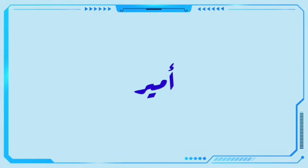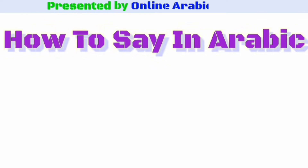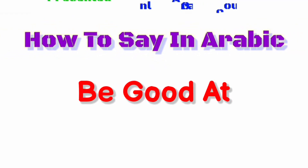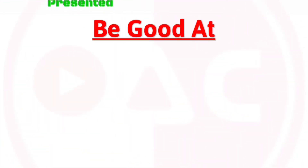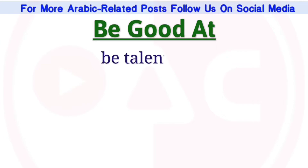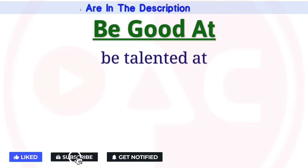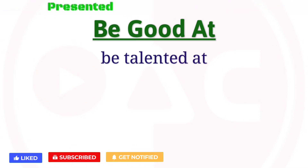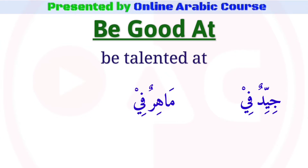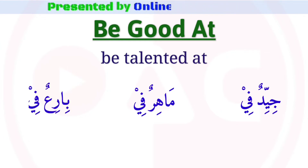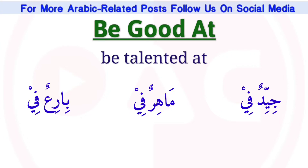Marhaba, it's Amir speaking. In this lesson we will learn how to say in Arabic language 'be good at' with different examples. Be good at means 'be talented at'. In Arabic we can express its meaning with different words like jayyidun fee, mahirun fee, and bari'un fee.